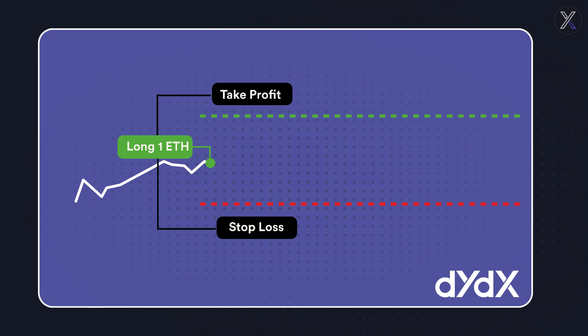In this example, once the bracket order has been executed, if the price falls to my stop loss level, a market sell is executed to close my position. Instead, if the price rises to my take profit level, then a market order would be automatically triggered at that take profit level.